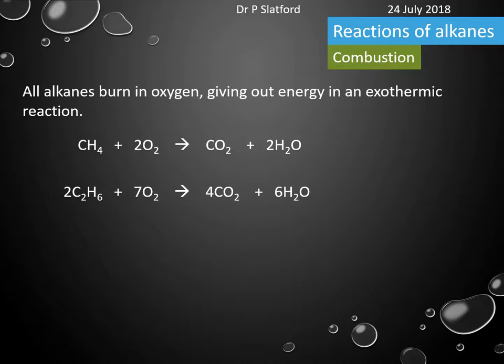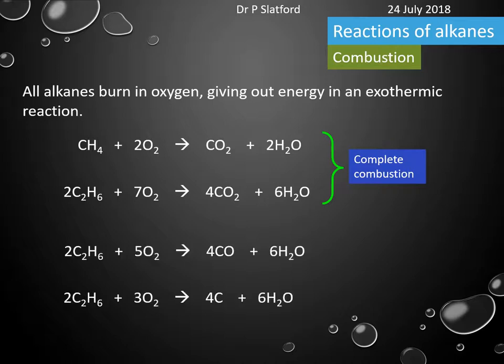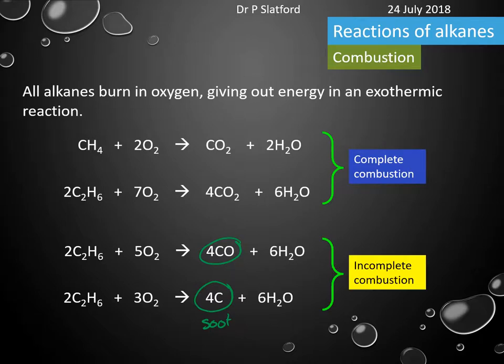When the products are only carbon dioxide and water, we say this is complete combustion — there is enough oxygen present to completely combust the fuel. However, in the absence of enough oxygen, we might get carbon monoxide or even carbon, which we call soot. This is known as incomplete combustion, and you are required to know the difference between complete and incomplete combustion.